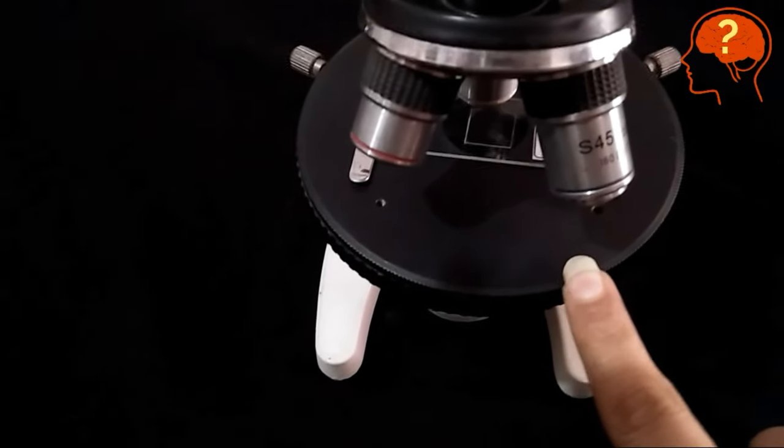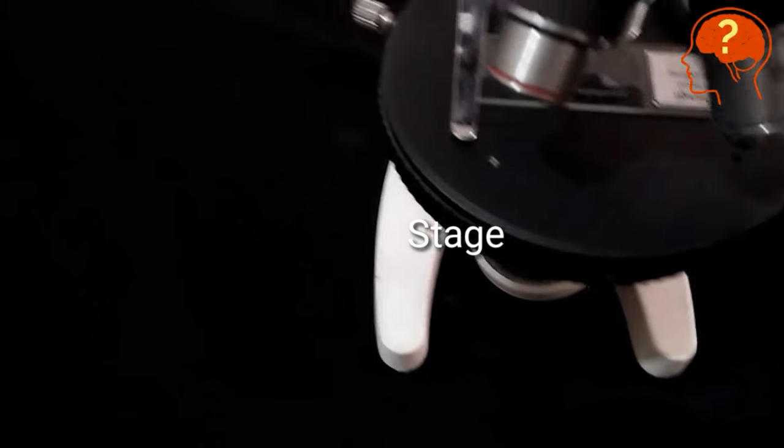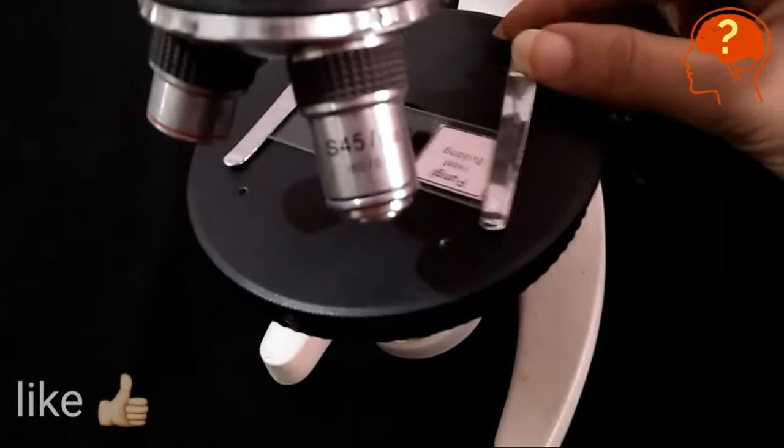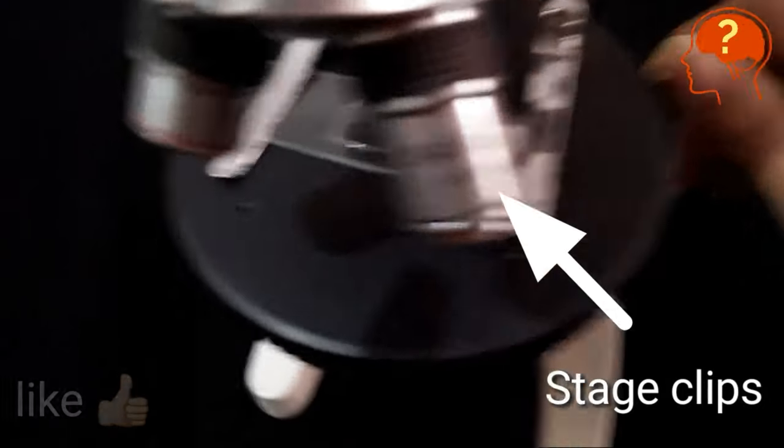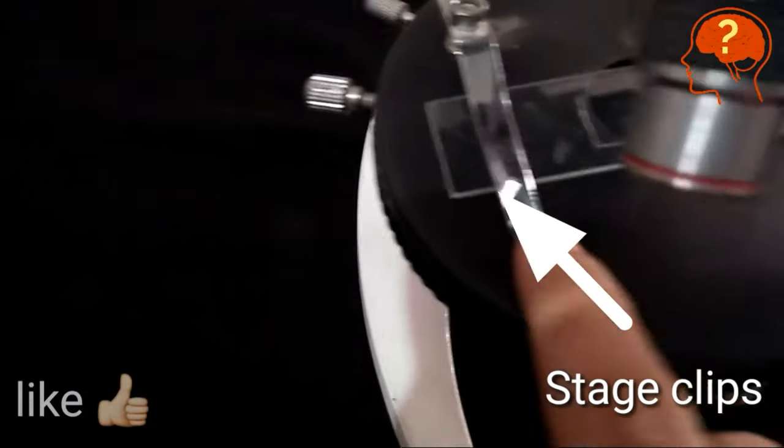This structure is called the stage where you will place the slide. Now you will adjust the slide with the help of these two stage clips. They help to move the slide.